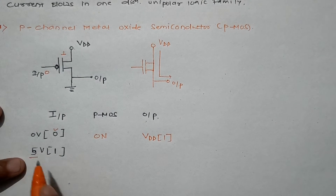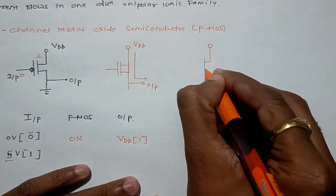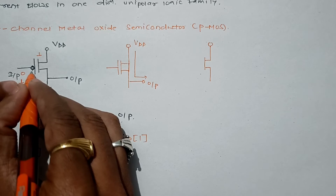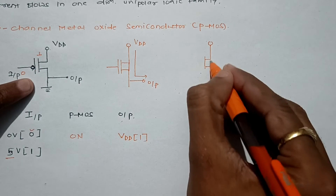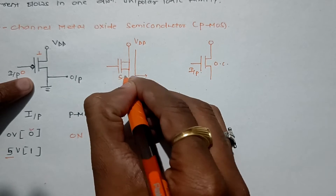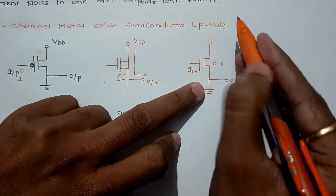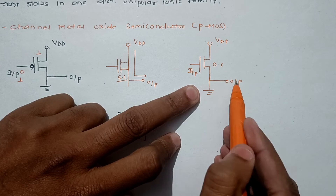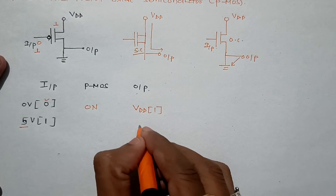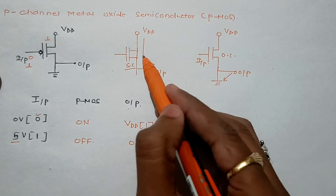In the reverse case, when we apply 5 volts or logic 1 at the input, its complement is 0, so the transistor will be OFF — open circuit. When it is open circuit, VDD cannot be connected to the output, so the output is connected through ground and we get logic 0. So: OFF means open circuit, ON means short circuit.